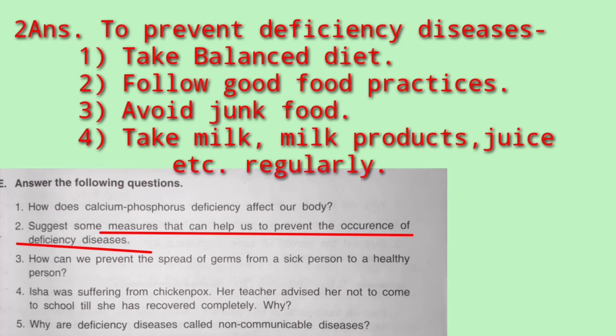Children need more nutrients because they are in a growing age. They need a lot of protein because their bodies are growing, so milk, milk products, and juice should all be included. This is how we prevent deficiency diseases.